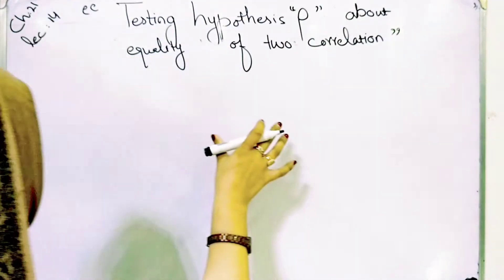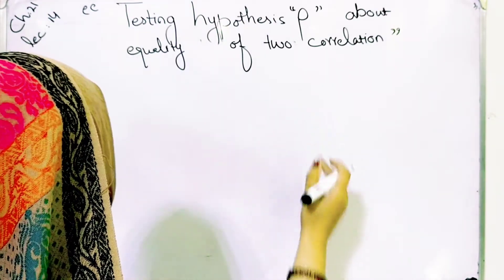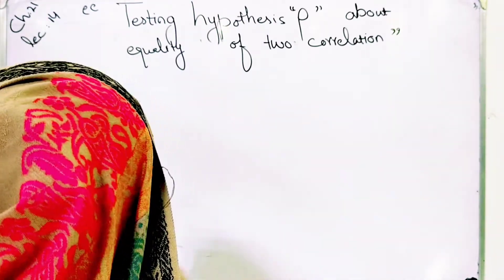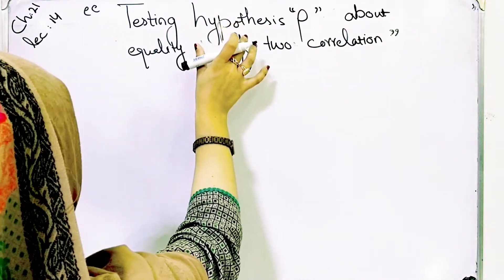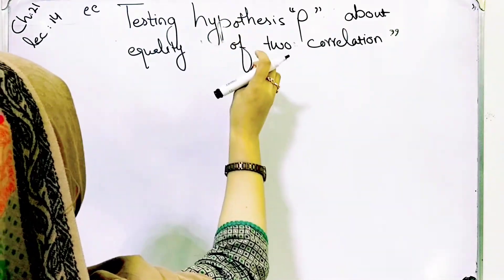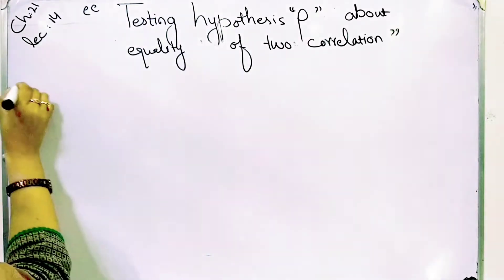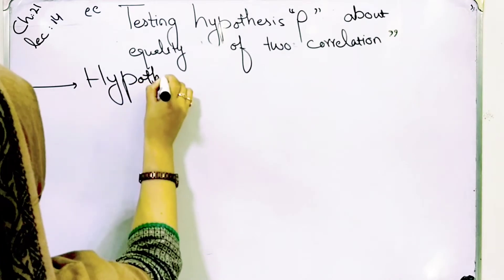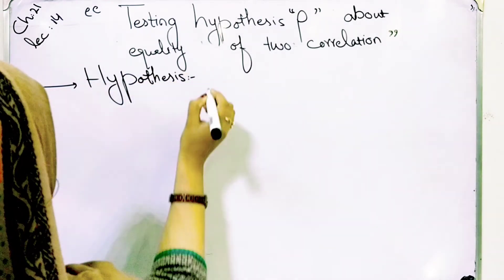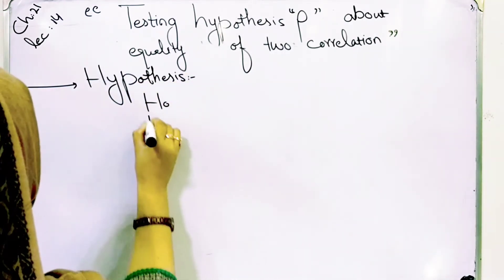First, we are reviewing the general procedure that we need to solve it. When doing a testing hypothesis question, there should be six steps. First of all, the hypothesis we have to make. We have two hypotheses: null and alternative.